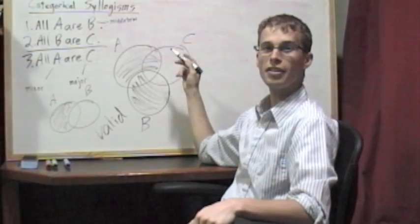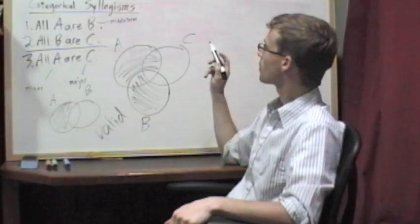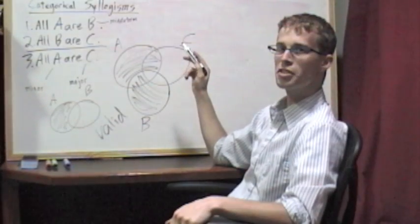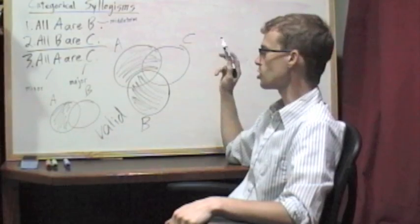This is, in fact, a valid argument. And that's what shows it to us. There's no way for the premises to be true, just like we've diagrammed, and the conclusion to be false. It's just not allowed.